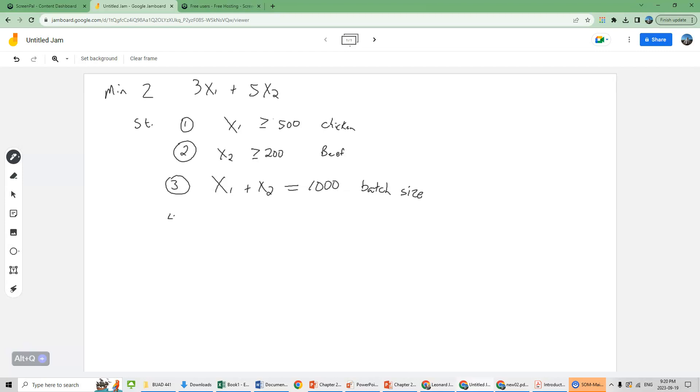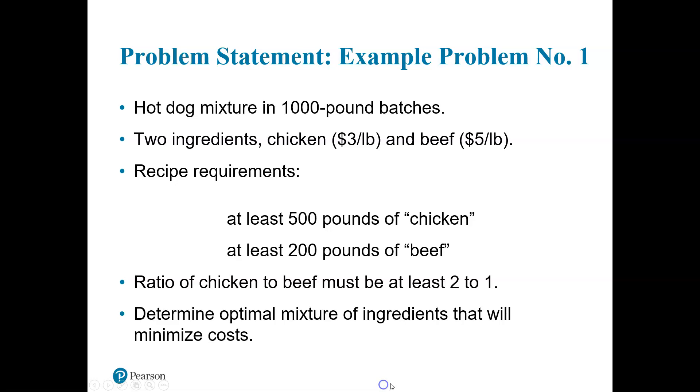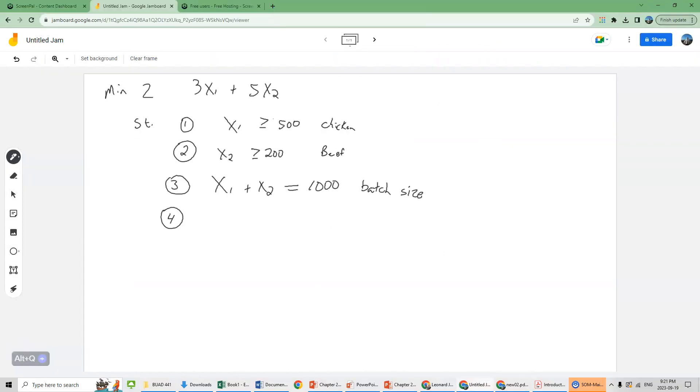Our fourth constraint. It'll take a little practice to write this one. The ratio of chicken to beef must be at least 2 to 1. Chicken to beef must be at least 2 to 1. So chicken, which is x1, and we have x2, which is beef. The ratio of chicken must be 2 to 1. So to make this equal, we're going to have to put a 2 value there.